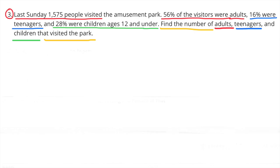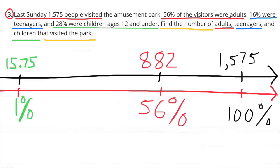Number 3: Last Sunday, 1,575 people visited the amusement park. 56% of the visitors were adults, 16% were teenagers, and 28% were children ages 12 and under. Find the number of adults, teenagers, and children that visited the park. I made a double number line with 100% represented by 1,575 on the right side. I divided 100% by 100 to get 1%, and divided 1,575 by 100 to get 15.75, placed directly above 1%.